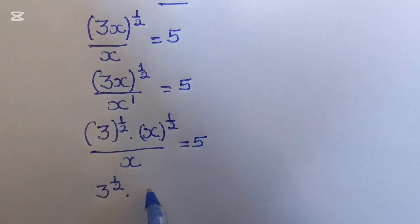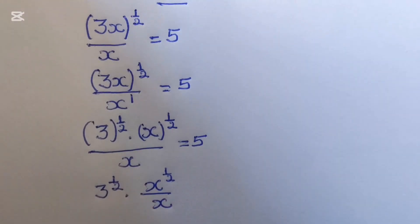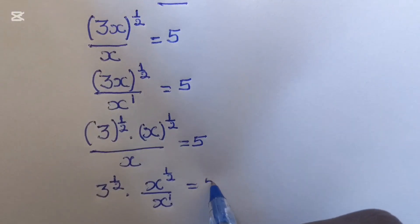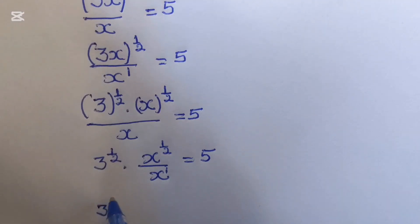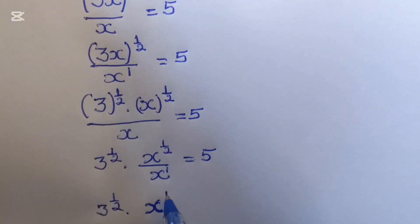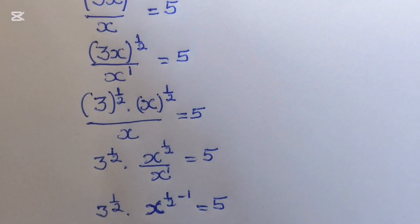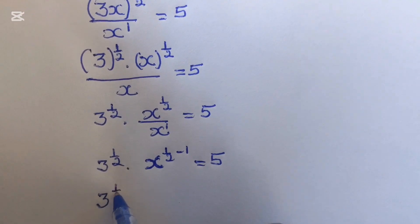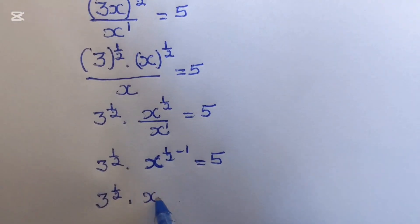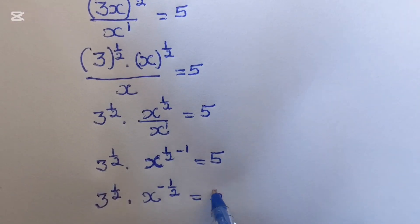This gives us 3^(1/2) times x^(1/2) over x^1 equals 5. Combining the x terms: x^(1/2 − 1) = x^(−1/2). So we have 3^(1/2) times x^(−1/2) equals 5.